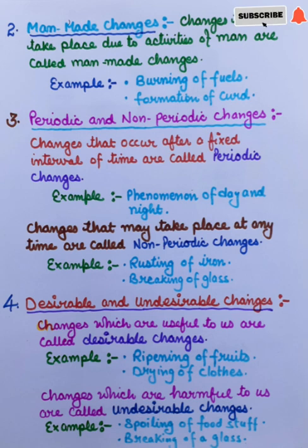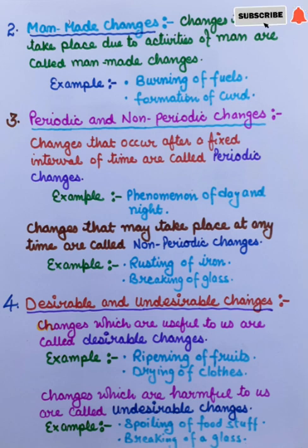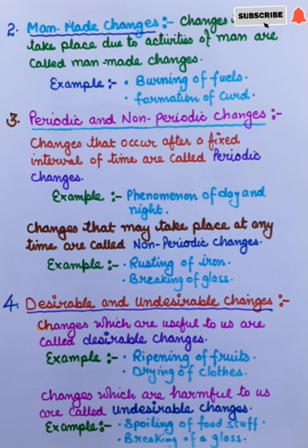Third: periodic and non-periodic changes. Periodic changes are those changes which occur after a fixed interval of time. For example, the phenomena of day and night. Changes that may take place at any instant of time are called non-periodic changes. For example, rusting of iron or breaking of glass — these are all non-periodic changes.